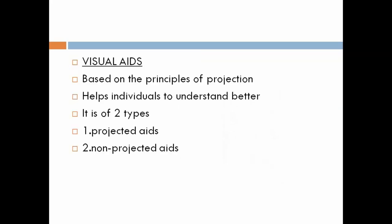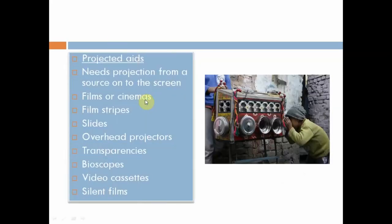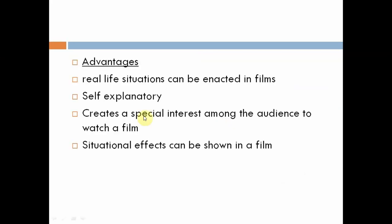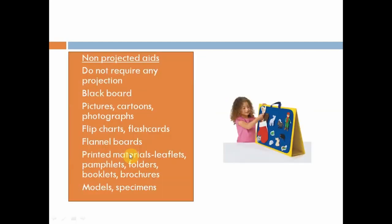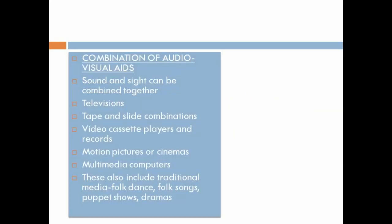Visual aids are mainly divided into projector and non-projector aids. Projector aids include film cinemas, film strips, slide projectors, bioscopes, and video cassettes. Non-projector aids are self-explanatory and create special interest — they don't require any projection. These include blackboard, pictures, cartoons, photographs, flip charts, flashcards, flannel boards, printed materials, leaflets, pamphlets, models, and specimens.